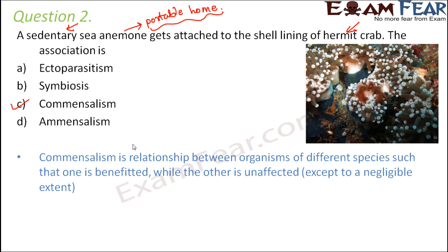By definition, commensalism is a relationship where one organism is benefited — here the sea animal — while the other is unaffected or affected only to a negligible extent. The hermit crab is almost unaffected, perhaps gaining slight protection from the sea animal's stinging cells, making this a good example of commensalism.